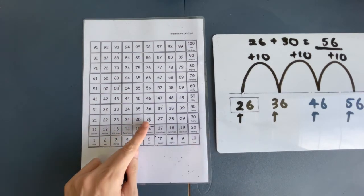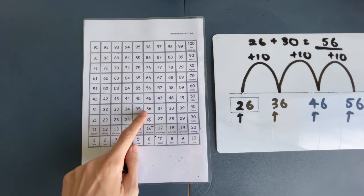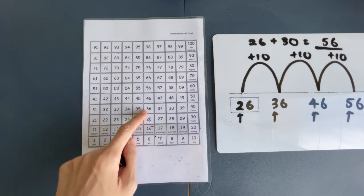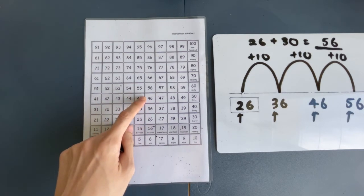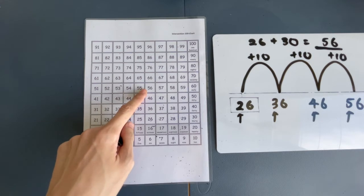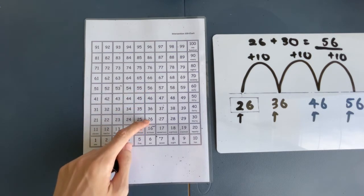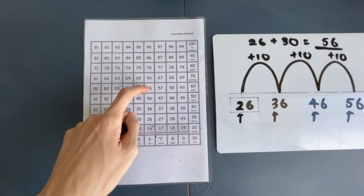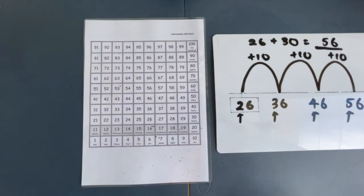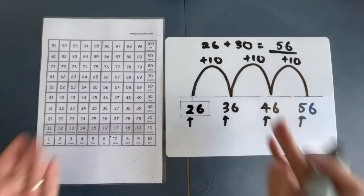So, 26, right? Let's find 26 on the number chart. Let's have 10 more. What's 10 more? 36. What's 10 more? 46. What's 10 more? 56. See that now? 26. Jump 3 times. 1, 2, 3. We get 56. Same thing.